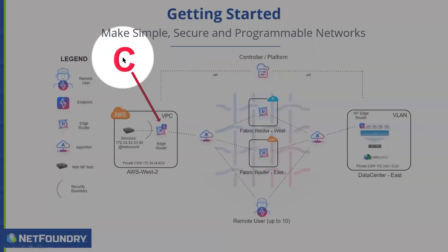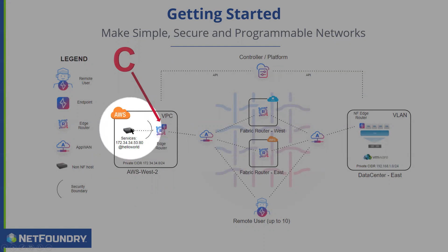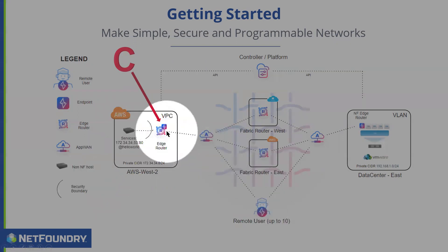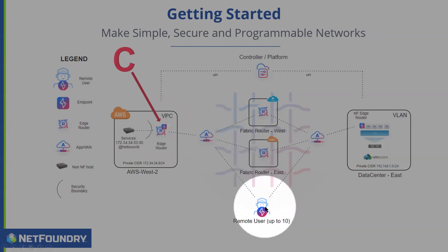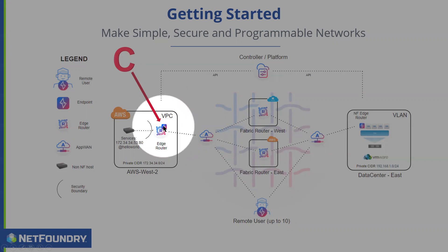This is step C in this exercise. We're going to be installing this edge router. This is just a VPC — a single VPC with a single network, 172.34.34. I have a web server here that does not have any NetFoundry software on it — it's all by itself. We talked about the security boundary: bringing it to the network, then to the host, then to the app. This example brings it right here — all the secure connectivity terminates there, and that is what that little half circle represents.